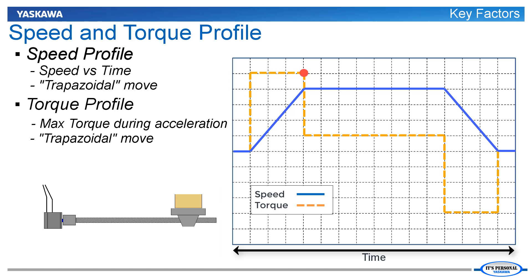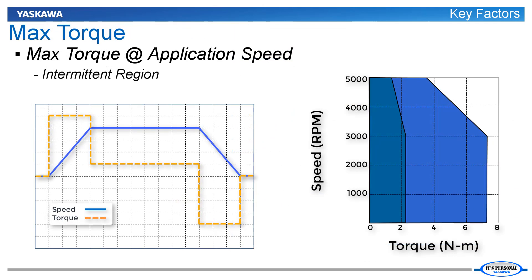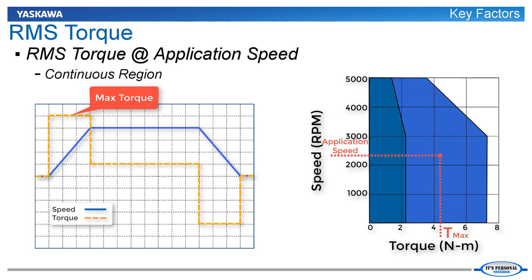This point of highest torque is called the max torque. Once the traverse speed is reached, a nominal level of torque must be applied to overcome friction and maintain speed. To decelerate the load, often a reverse torque is required. The reverse torque during deceleration is not as high as the forward torque during acceleration, since friction also helps decelerate the load. And when friction torque is high, a forward torque may be required during deceleration so that the motor doesn't slow down too quickly. It is important to ensure that the motor can produce the required max torque at the application speed. The max torque at application speed ideally falls within the intermittent region of the motor's speed-torque curve. It can also fall within the continuous region, but this may be an indication that the motor is oversized.